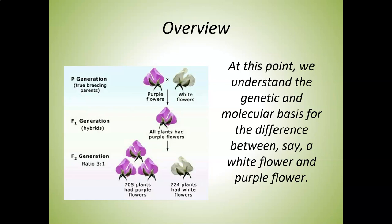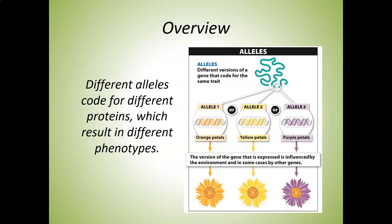Different genes encode different traits, and different alleles can code for different versions of those traits. You have learned a lot about that already, and this next unit is going to continue that conversation about inheritance and why different phenotypes are seen. This is just another picture showing how different alleles can code for different versions of the same phenotype.